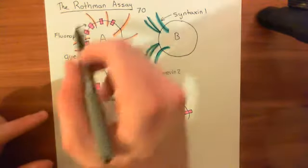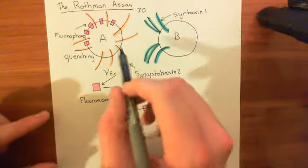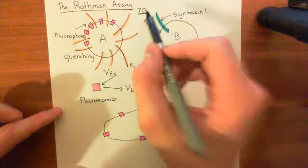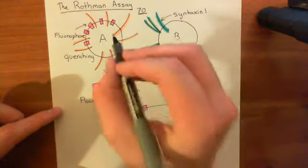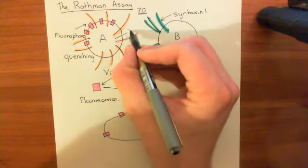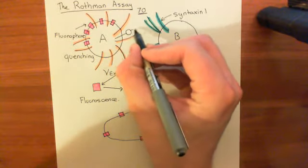Let's now say we've got a physiological concentration of synaptobrevin in this vesicle, so 70 of them. Sorry, a liposome. It's a liposome, not a vesicle. We've got a physiological concentration of synaptobrevin, and we now stick in our synaptotagmin.